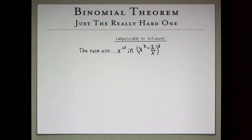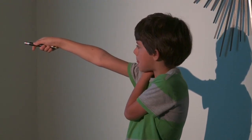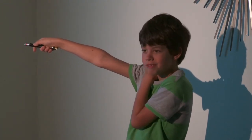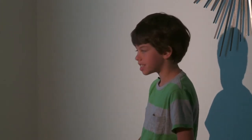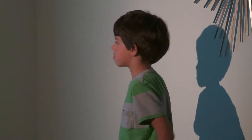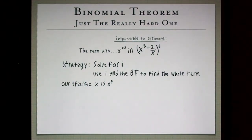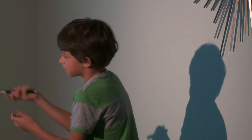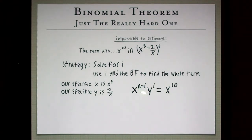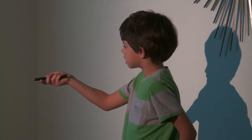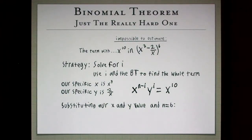Now this is practically impossible to estimate. The term with x to the 10th and x cubed minus 2 over x to the 6th. One reason is because x cubed 3 isn't a common factor of 10. And also we've got an x in the denominator and the numerator here, so they might start canceling each other out, which would make it confusing. So we have the same exact strategy. Solve for i and use i in the binomial theorem to find the whole term. And again, our specific x is x cubed. But we also have to take into account our specific y is negative 2 over x. And so we have the same thing, only we're setting it equal to x to the 10th. And we have to substitute our values in, x and y values, n equals 6.